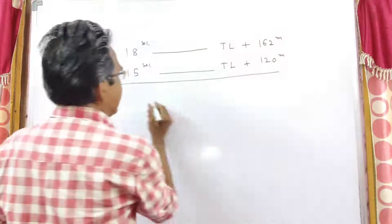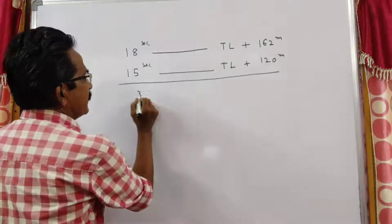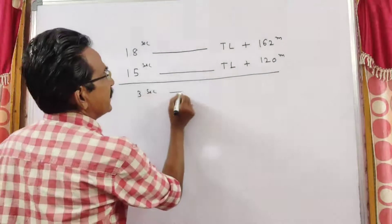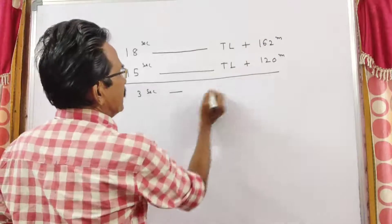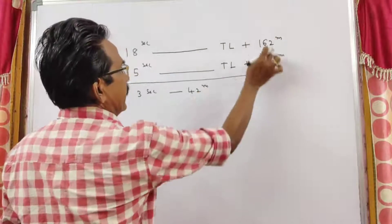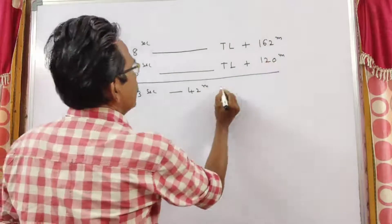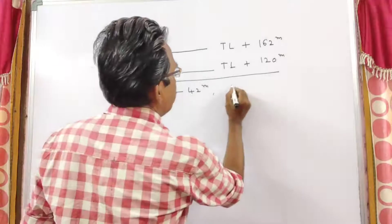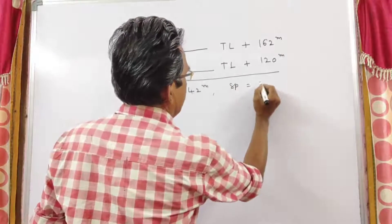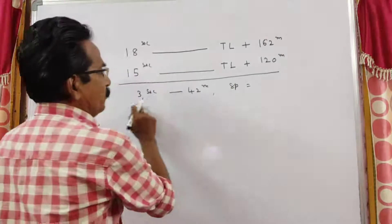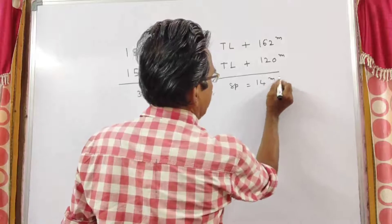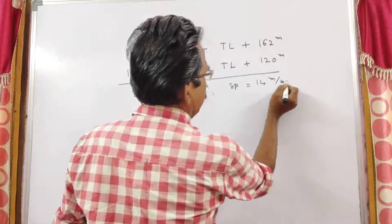So in 3 seconds, the train travels 42 meters — this minus this. So the speed of the train is equal to 42 by 3, that is 14 meters per second.